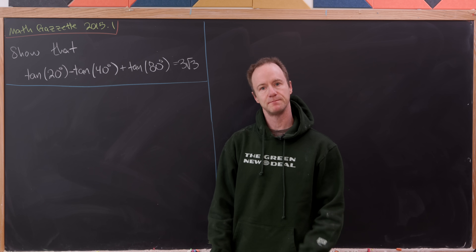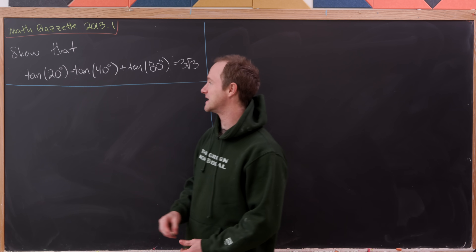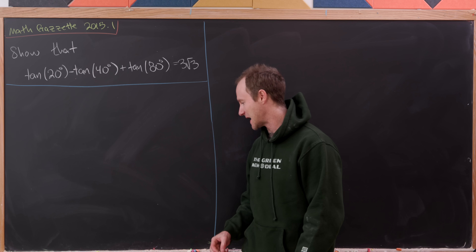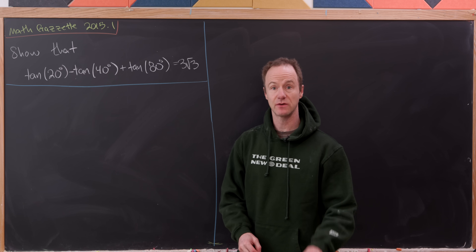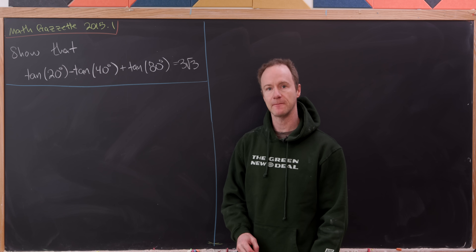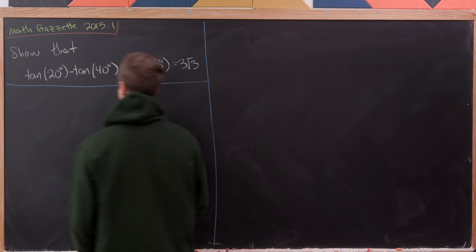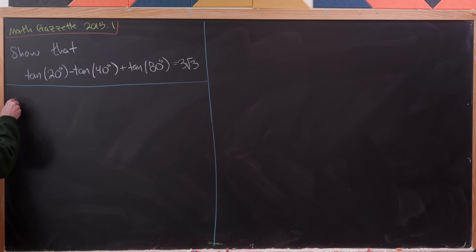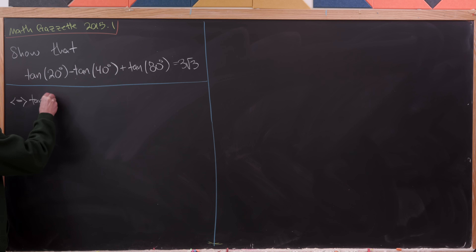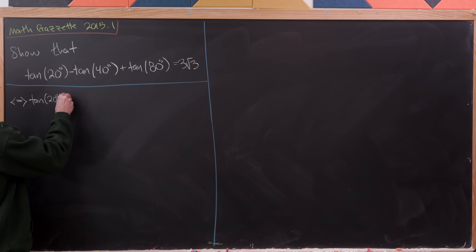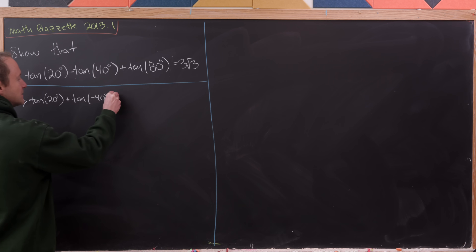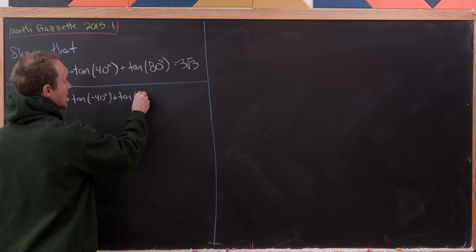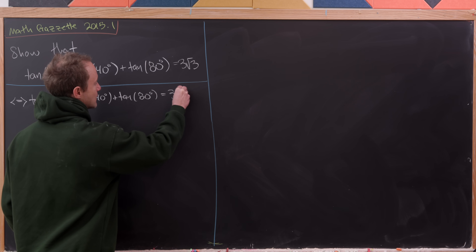Let's look at this pretty cool trigonometry problem. Our goal is to show that the tangent of 20 degrees minus the tangent of 40 degrees plus the tangent of 80 degrees is equal to 3 times the square root of 3. The strategy starts by observing that this is equivalent to: tan 20 degrees plus tangent of minus 40 degrees plus tangent of 80 degrees equals 3 root 3.